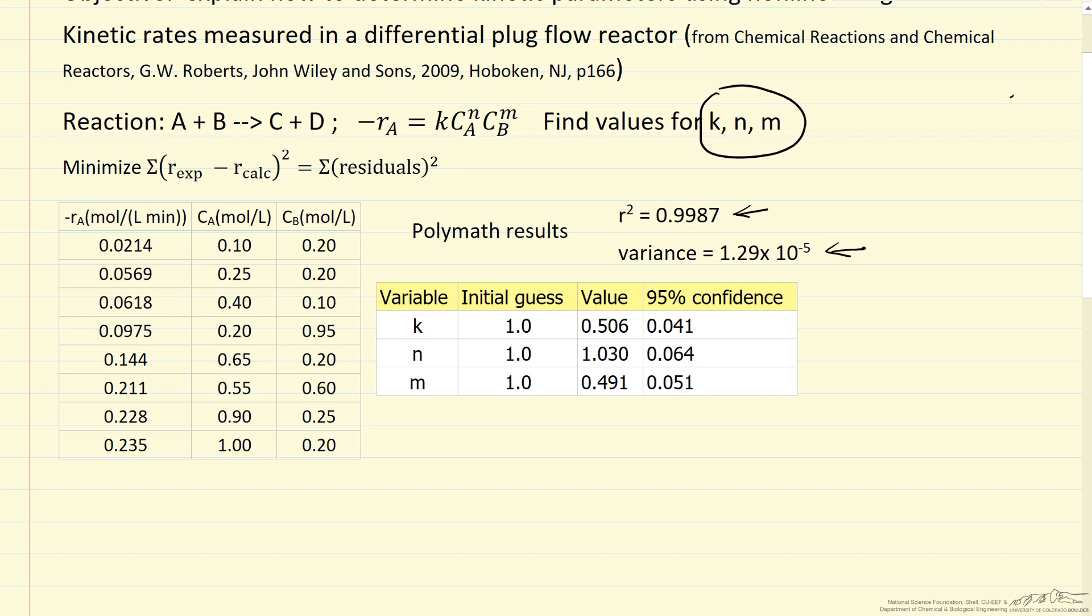And then what's most useful is to look at the 95% confidence interval. The way nonlinear regression programs work, you make an initial guess for each value - in this case, one for each parameter - and then it calculates the best fit.